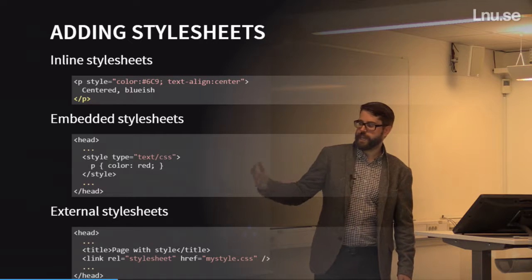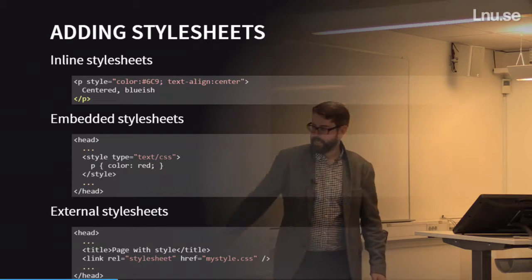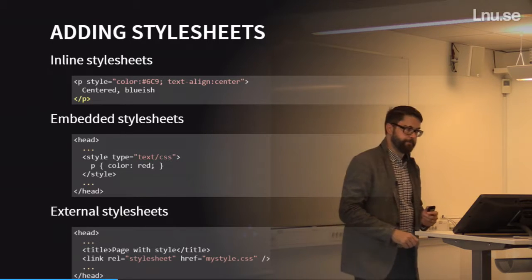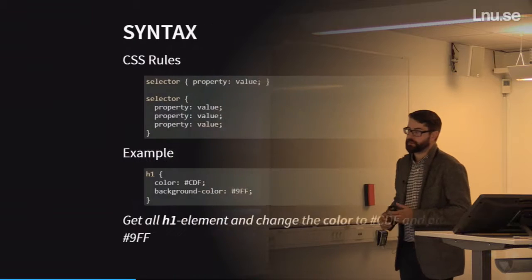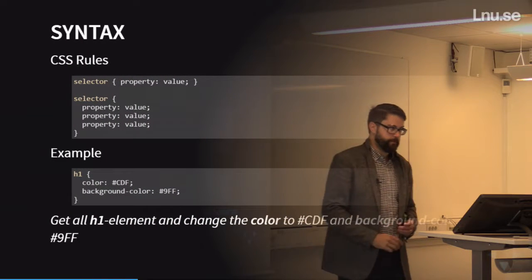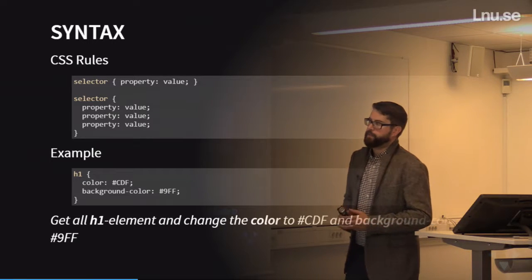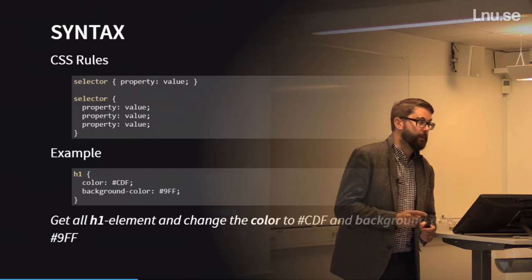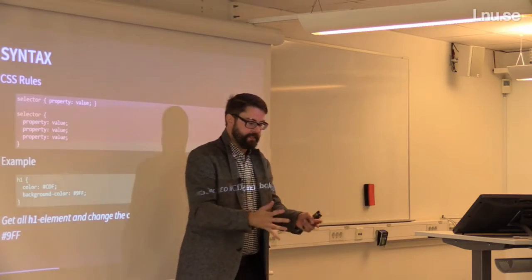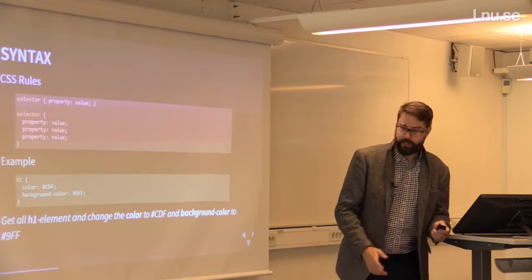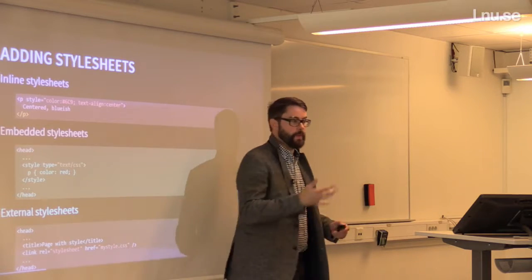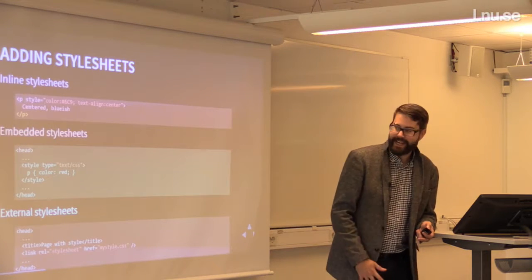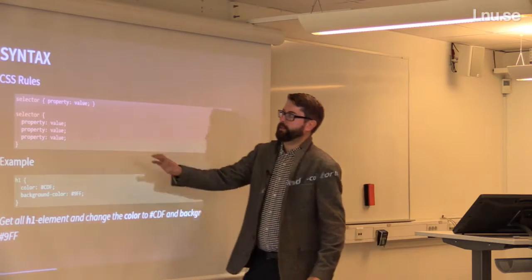We can use descendant selectors. 'H1 EM' takes all EM elements that are descendants of an H1 — meaning they're somewhere inside the H1, not necessarily direct children. For example, 'P EM STRONG' selects all strong elements inside an EM that is itself inside a P element. So in the example: we have a P surrounding everything, inside which is an EM containing a STRONG. That text will be selected and can be colored blue. The strong text outside the EM won't be selected because it's not inside an EM.